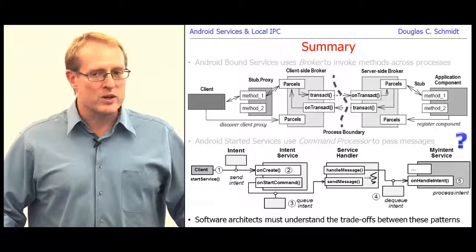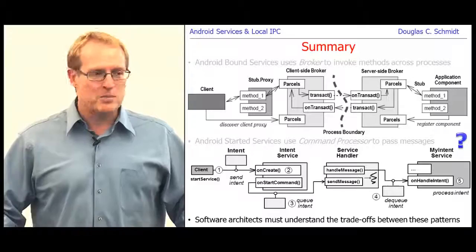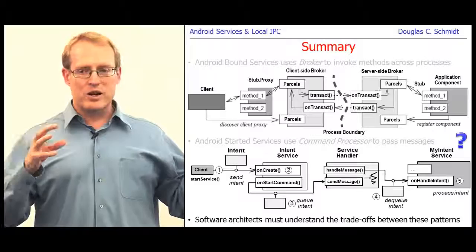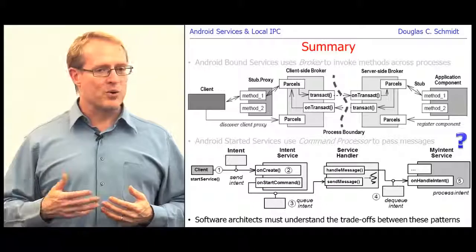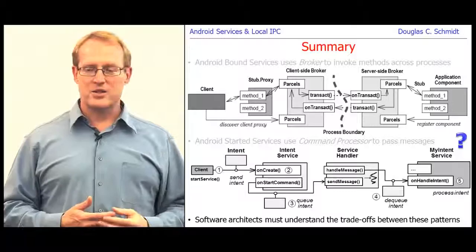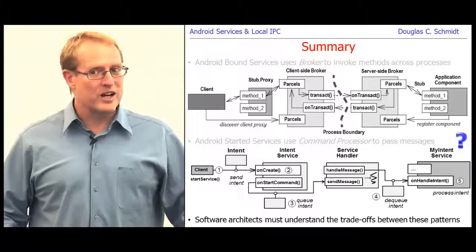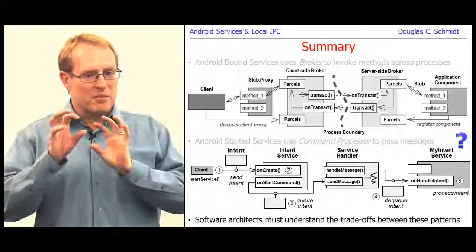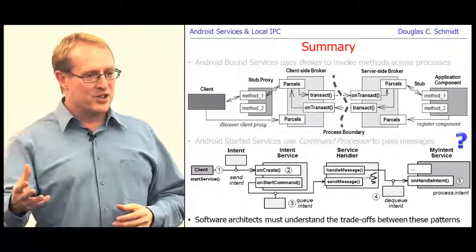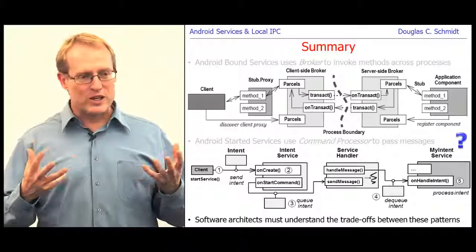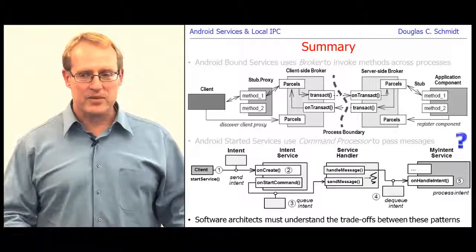You can use broker and command processor for different purposes — they somewhat compete with each other, and you'd choose one based on your circumstance. It's your job to understand the trade-offs. One nice thing about understanding this as patterns rather than just Android features is it gives you a bird's-eye view of architectural trade-offs. As you switch platforms — Android to iOS, smartphones to clouds — these patterns exist in almost all those contexts. If you only understand them as details of one platform, you'll have to relearn everything from scratch when you move.